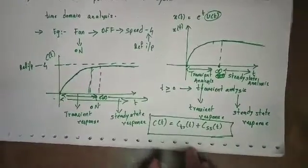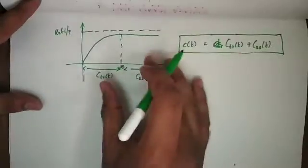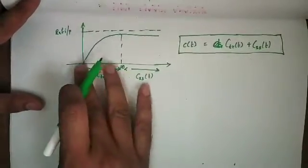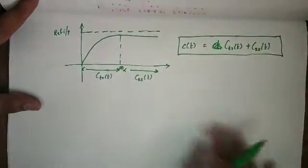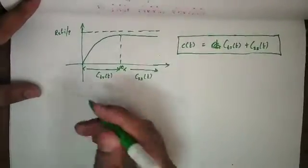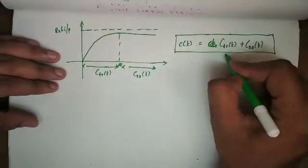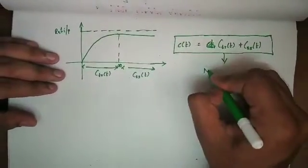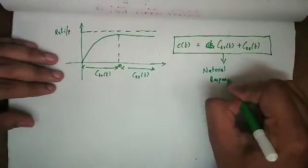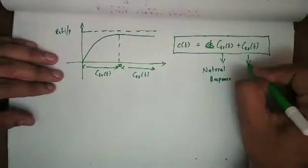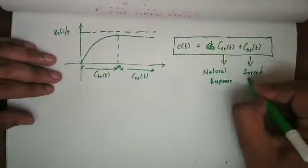I will clear this for you. I will discuss the summary on the next page. The response equals transient response plus steady state response. We will extend the discussion: transient response means natural response; steady state response means forced response.